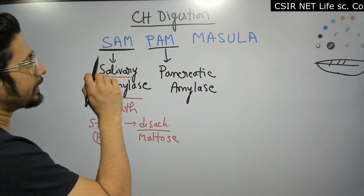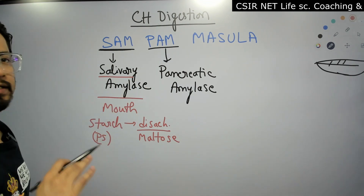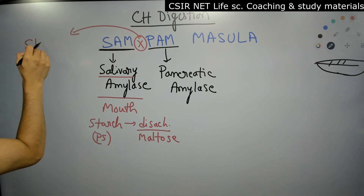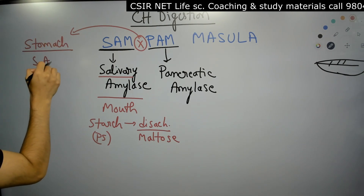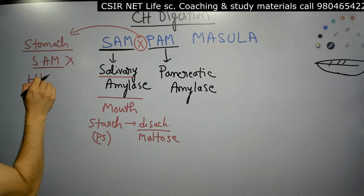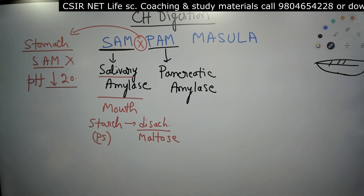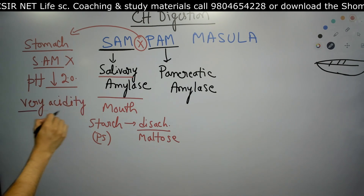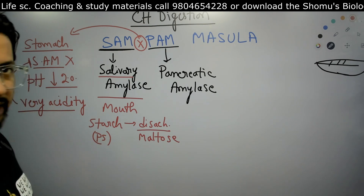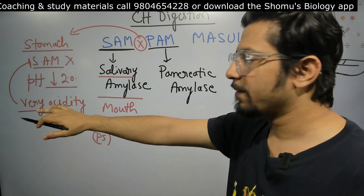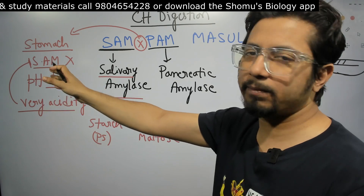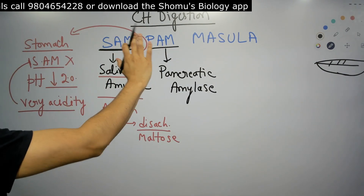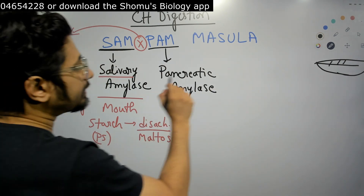After the mouth, the food goes to the stomach. In the stomach there is no noticeable carbohydrate digestion. Salivary amylase cannot work here because the pH is around 2 — very very acidic. This acidity inhibits salivary amylase, rendering it inactive in the stomach. So no carbohydrate digestion occurs in the stomach. Then comes PAM — pancreatic amylase.